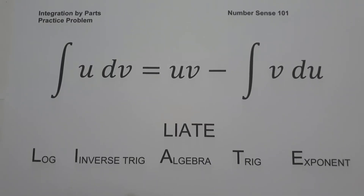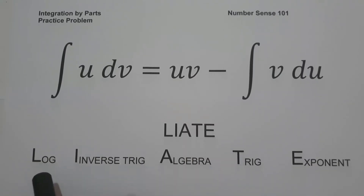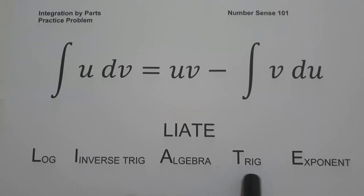One of the problems you may encounter in solving indefinite integrals using integration by parts is identifying the value of u. I have an acronym you can use: LIATE. U will be the first thing you find in that list — L for log, I for inverse trig, A for algebra, T for trig, and E for exponent.